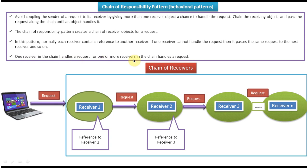The second scenario is one or more receivers in the chain handle the request. The request comes to receiver one; receiver one handles it and then checks if further passing is needed. If needed, the request is sent to receiver two, which also handles it and checks further passing. If needed, it sends to the next receiver. In this case, multiple receivers handle the request.